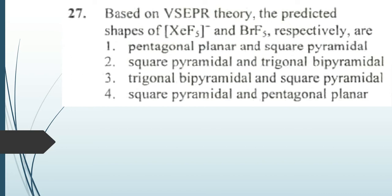Based on VSEPR theory, the predicted shapes of XeF₅⁻ and BrF₅ respectively are: 1st option, pentagonal planar and square pyramidal; 2nd option, square pyramidal and trigonal bipyramidal; 3rd option, trigonal bipyramidal and square pyramidal; 4th option, square pyramidal and pentagonal planar.